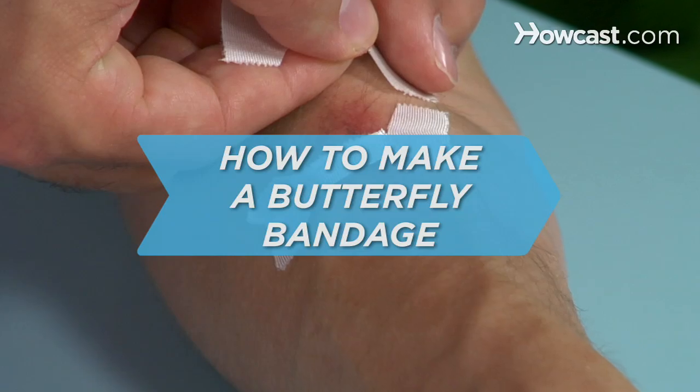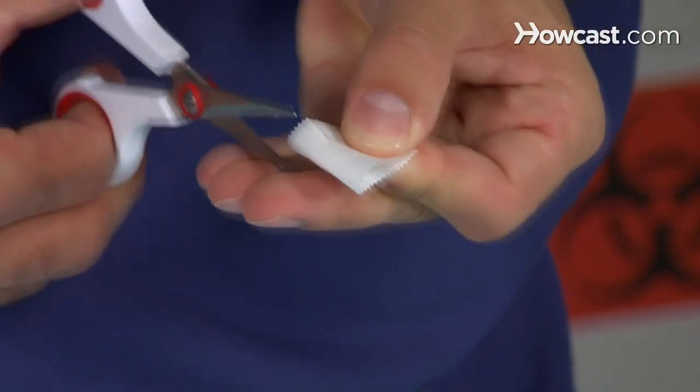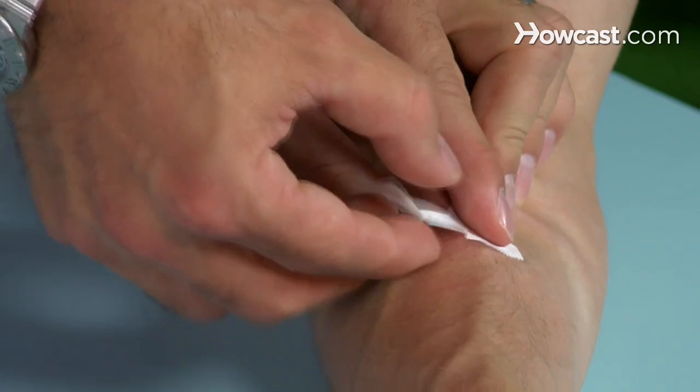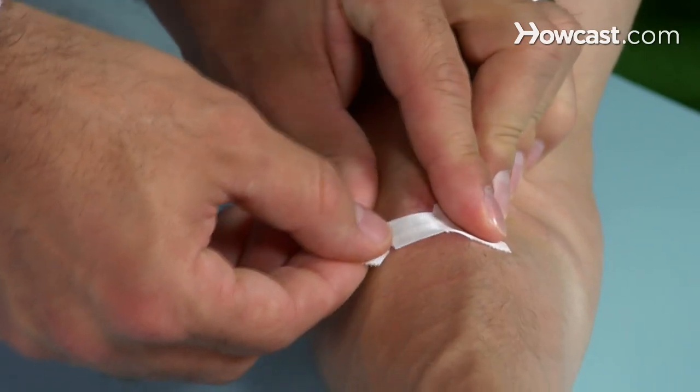How to Make a Butterfly Bandage. A butterfly bandage is a handy item when a wound has smooth edges. It brings the edges of skin together and thus speeds up the healing.